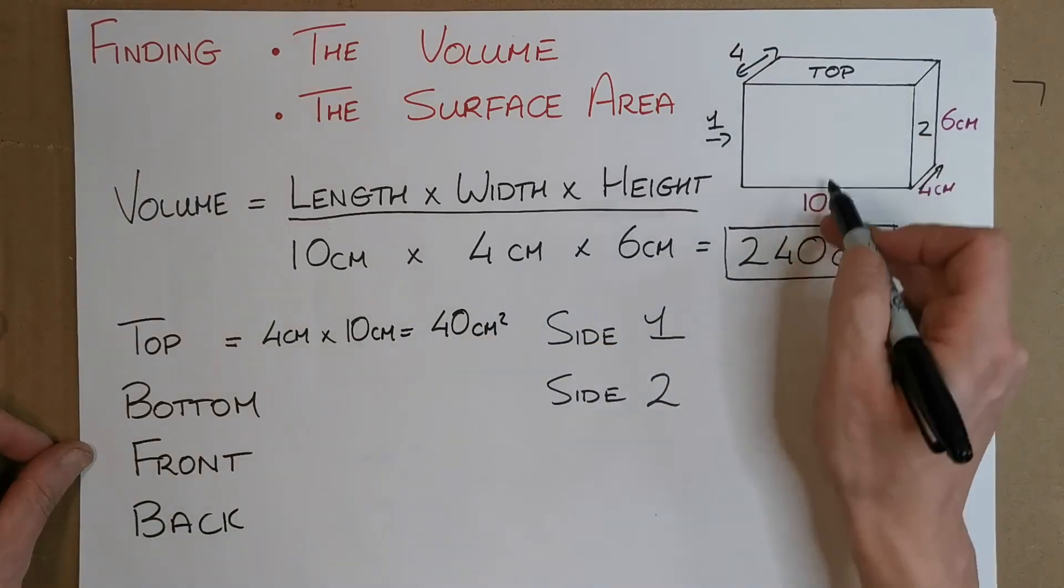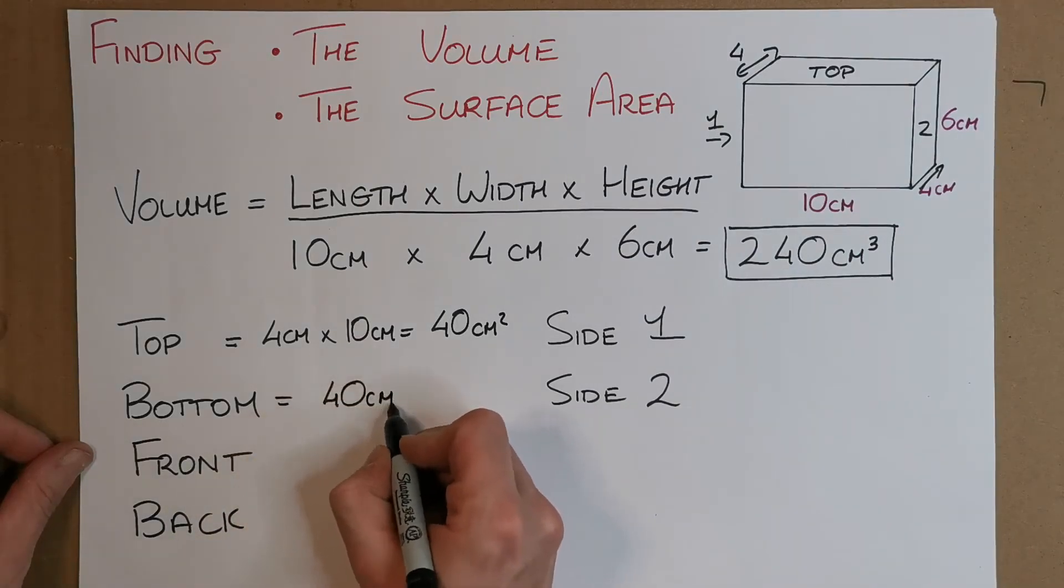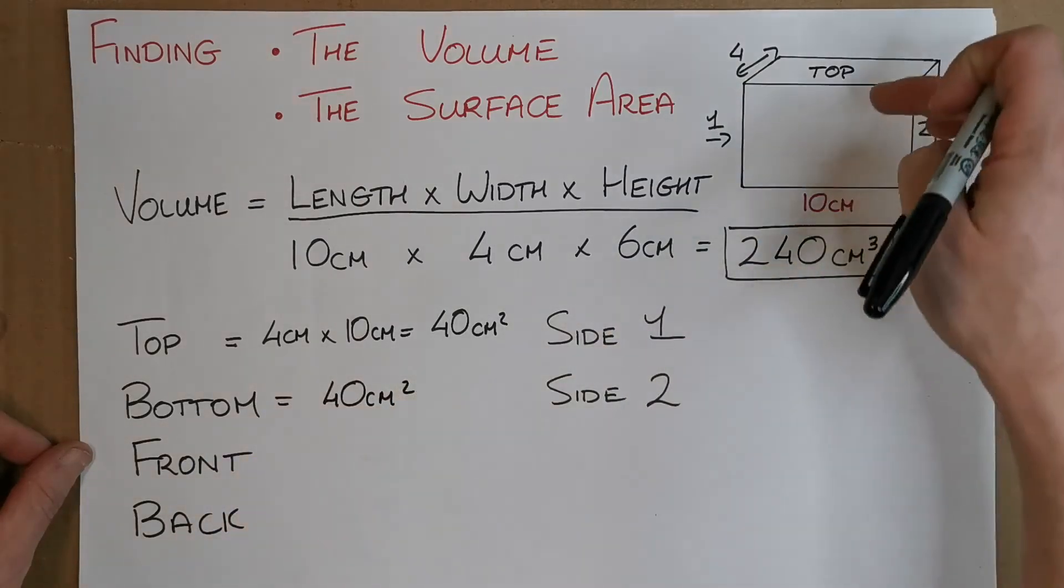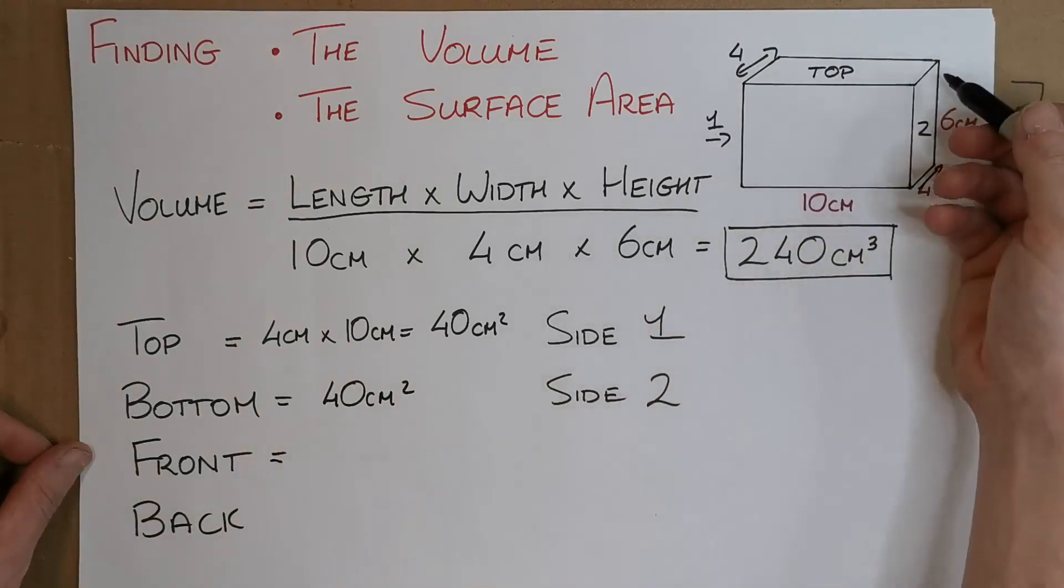It turns out that the bottom, or the side opposite, is also the same. So it's directly below it, isn't it? It's like looking down, so the top and the bottom are both the same. It's going to be the same for the front and back. Once we get the front, it's going to be the same as the back.